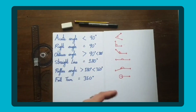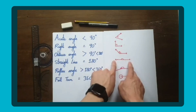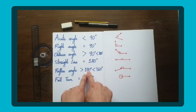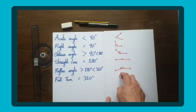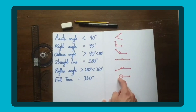An obtuse angle is more than 90 degrees but less than 180 degrees — it may look like that. A straight line is literally what it sounds like, just a straight line, and that's 180 degrees. A reflex angle is more than 180 degrees but less than 360 degrees, so it may look something like this. And then we've got a full turn, which is literally just one line because we've made a full turn, so that'll be 360 degrees.